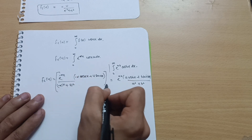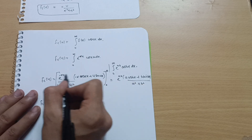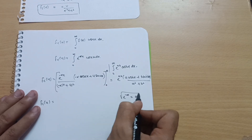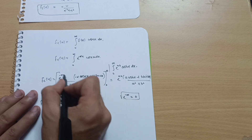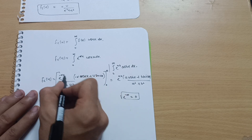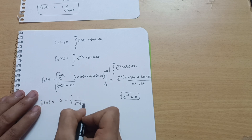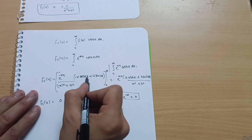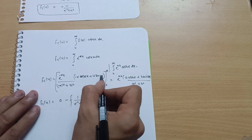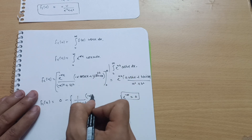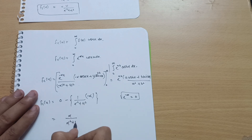Applying the upper limit, e^(−α·∞) = e^(−∞) = 0, so the upper limit term is zero. For the lower limit, x = 0: e^0 = 1, cos(0) = 1, and sin(0) = 0. So the lower limit gives 1/(α² + u²) times [−α·1 + u·0] = −α/(α² + u²). With upper minus lower: 0 − (−α/(α² + u²)) = α/(α² + u²).